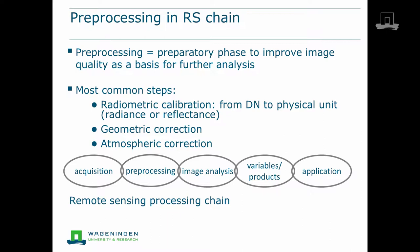Image preprocessing can be seen as a preparatory phase to improve image quality before the actual image analysis starts. Common steps in preprocessing are radiometric calibration, geometric correction, and atmospheric correction. We can put this as one of the links in the whole remote sensing processing chain from image acquisition to preprocessing, image analysis, production of variables and products, and finally to the application.